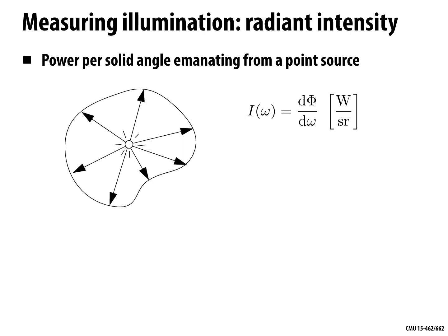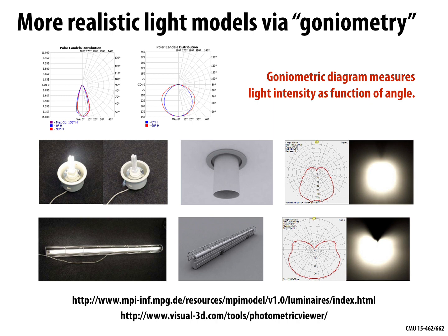Just as we can describe the light coming into a point in detail, we can describe the light emitted from a source in detail — for example, the power per solid angle emanating from a point source with a non-uniform distribution. You can take a real light bulb and measure this to get a goniometric diagram — the light intensity as a function of angle. People have done this, and you can download these models and use them in your scenes. This is one important use case of photorealistic rendering: architectural pre-visualization, getting a sense of how a building will really look before it's built.